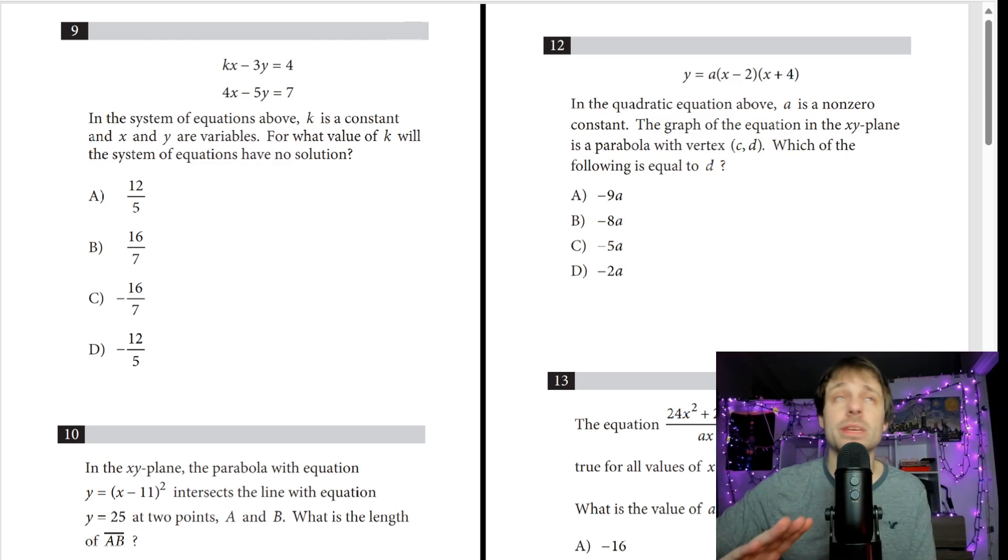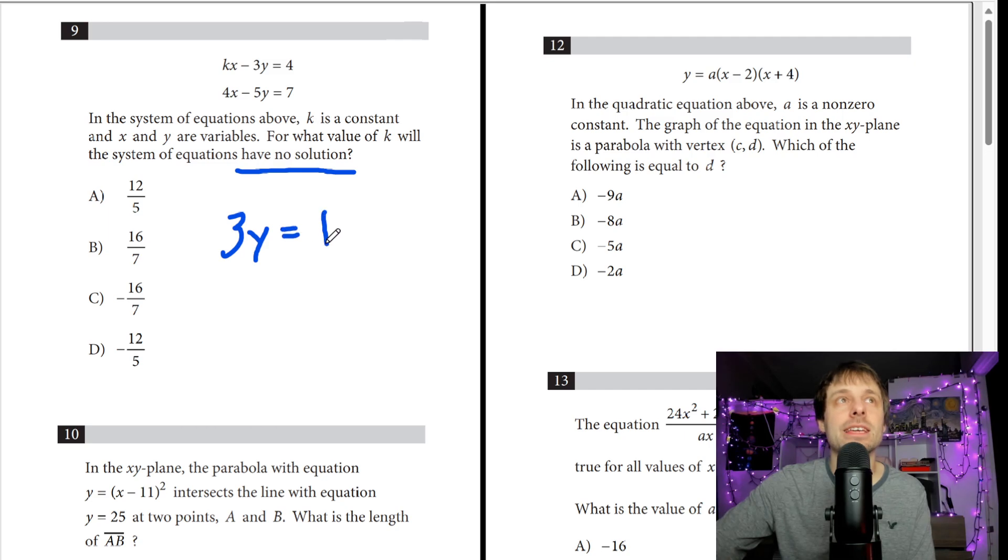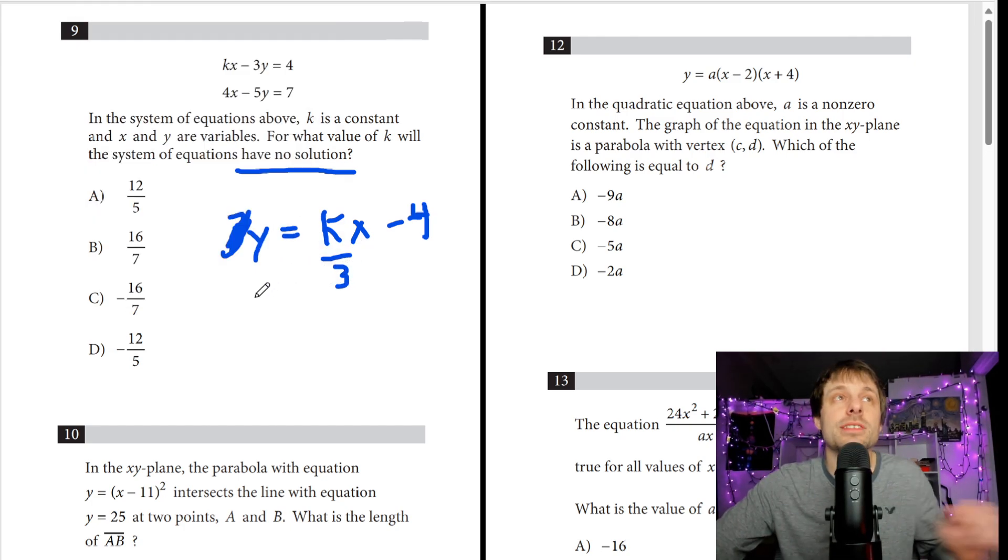When I see number 9, I immediately identify it. We have two linear equations with an unknown variable. They are going to say something like no solution, maybe infinitely many solutions. We know what these mean now. Infinitely many means they would be the same line. No solution means they're parallel lines, and I would just get their slopes. Here it is. I see no solution, so I just get their slopes real quick. Add the 3y to the other side, and I get kx minus 4, and divide that by 3. So I have my slope for this side.